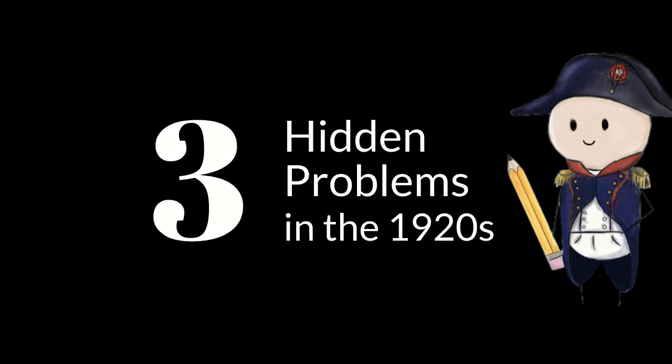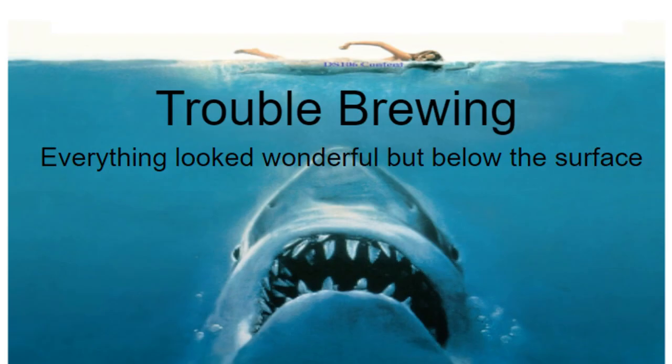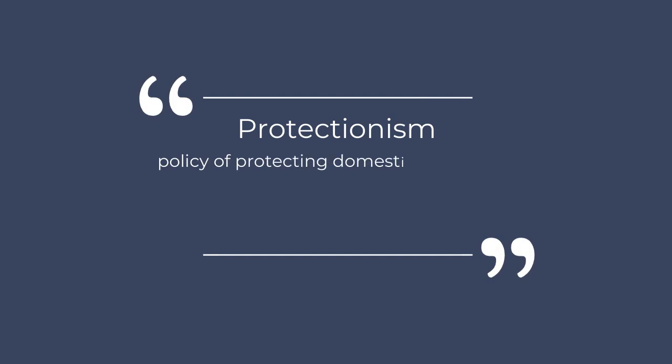Welcome to Mr. Fleming's history channel. Today let's review the three hidden problems in the 1920s. The 1920s was a period of immense prosperity, growth, and hope. The Roaring 20s looked like they would continue forever, yet under the surface, unseen by most, three events were going on that would bring the prosperity crashing down.